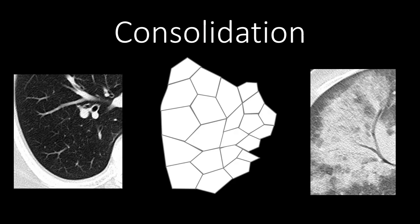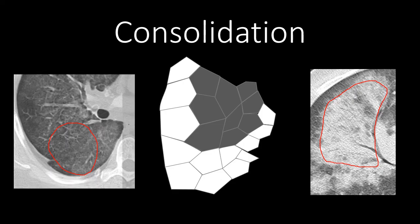If we compare ground glass to consolidation, notice how dense the opacification is in consolidation. Instead of incomplete filling or incomplete collapse of the alveoli, we have very dense or near-complete filling of the alveoli. Compare that to an example of normal lung. Ground glass shows intermediate density, while consolidation shows a more dense, complete opacification.